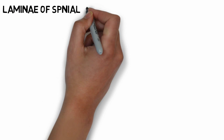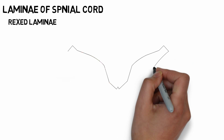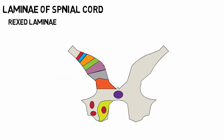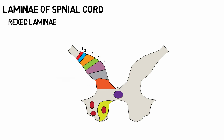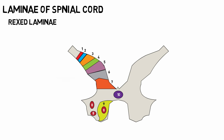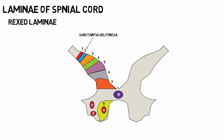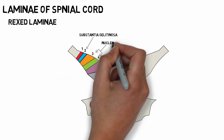Before progressing further, it is important to understand the concept of laminae of the spinal cord, also known as the Rexed laminae. This is the section of the central butterfly-shaped grey matter of the spinal cord, which is divided into 10 laminae named 1 to 10 from posterior to anterior. For the spinothalamic tract, we are mainly concerned with the first four laminae. Lamina 2 is known as the substantia gelatinosa, and laminae 3 and 4 collectively are known as the nucleus proprius.